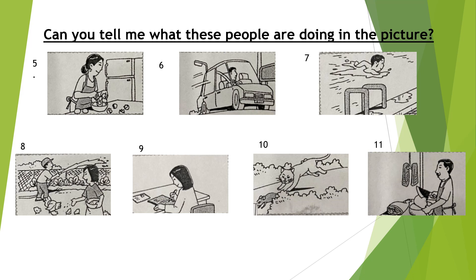Number nine — write that verb in English. Number ten — you have the mouth action, that's a verb. Number eleven — this is easy, you can write on your own.